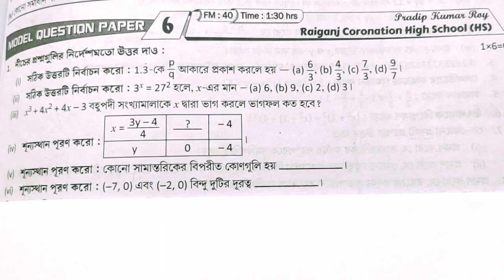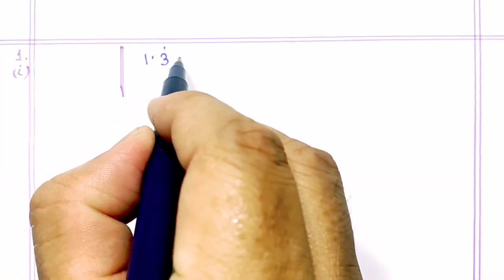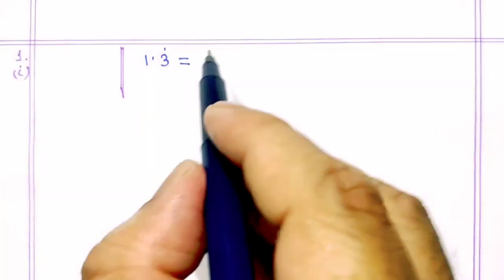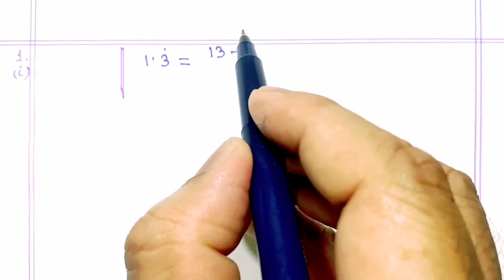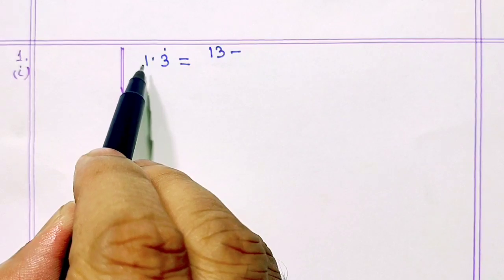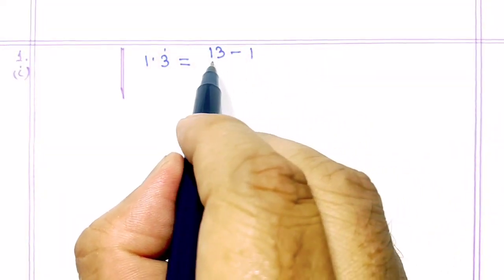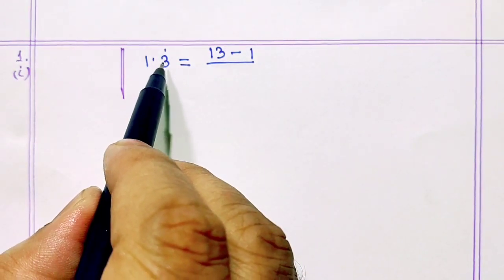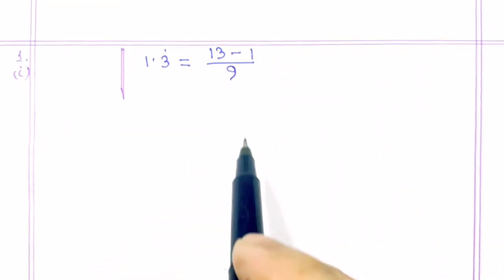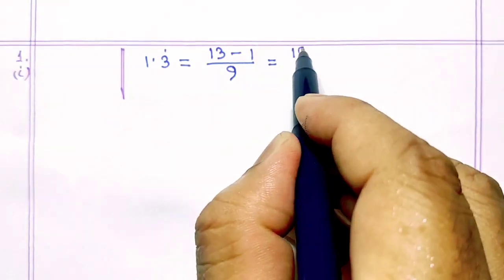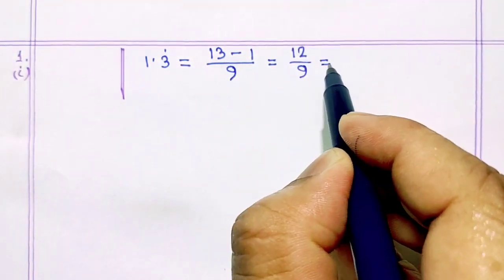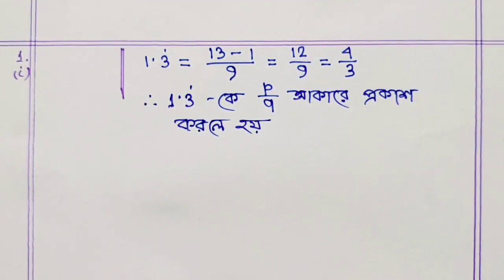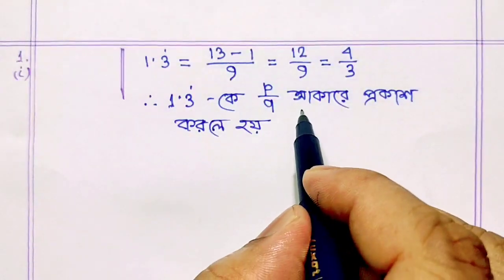7 by 3, 9 by 7. 1.3 repeating equal to decimal — removing the repeating point, the number becomes 13. Thirteen minus the non-repeating part: only 9, so equal 12 by 9. Simplify by dividing by 3: gives 4 by 3. So 1.3 recurring expressed as P by Q form equals 4 by 3.